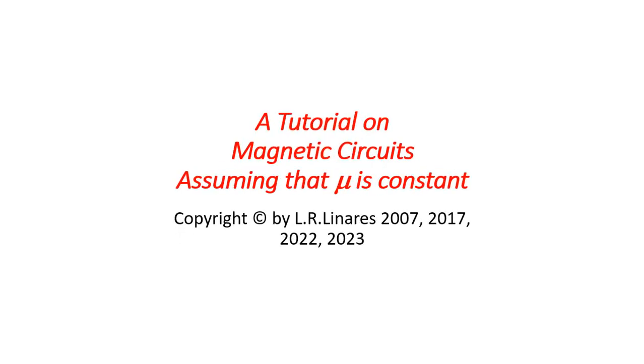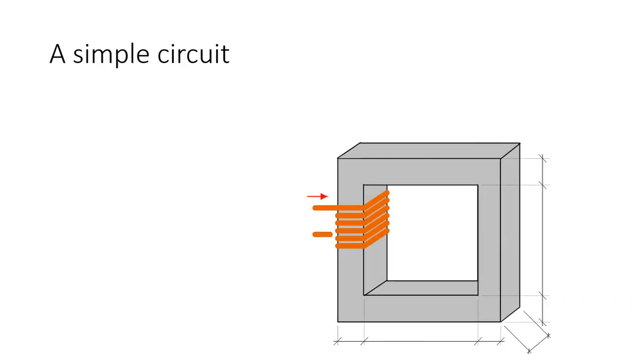This is a tutorial on magnetic circuits. Let's assume that the permeability of the iron were constant. In that case, I'll show you two ways of solving the circuit in this first mini-video. Let's do it this way. Consider a very simple magnetic circuit, this one.